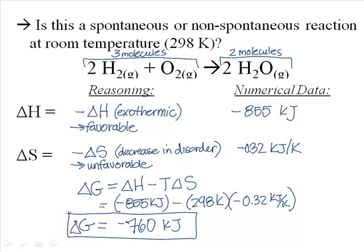The most important part of that answer is the negative sign. The fact that the delta G is negative means I have a spontaneous reaction. Hopefully we could have anticipated that because if the space shuttle's reaction was not spontaneous, it would be pretty hard to launch the space shuttle. Now you can see both how we reason that out, as well as where the numbers actually plug into the equation. This is an example of using the Gibbs free energy calculation to determine whether a reaction is spontaneous or not spontaneous.